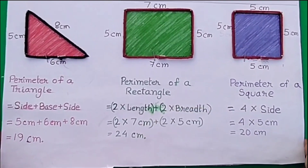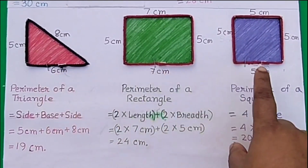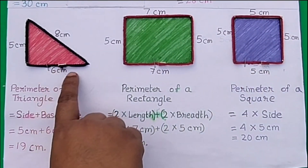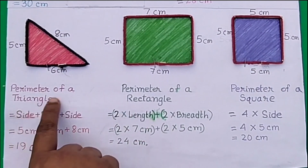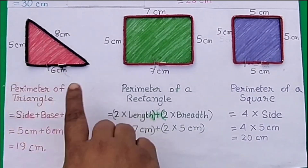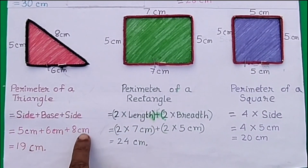Now let's see how to find the perimeter of a triangle, rectangle, and square. A triangle has 3 sides. To find the perimeter of a triangle, we have to add all 3 sides. The length of the sides of this triangle is 5 cm, 6 cm, and 8 cm. So the perimeter is 19 cm.